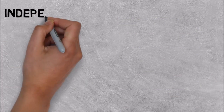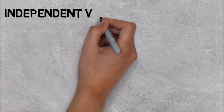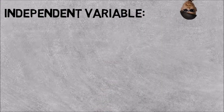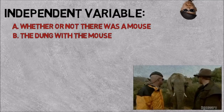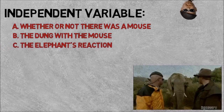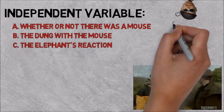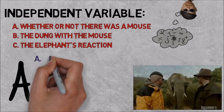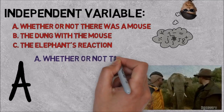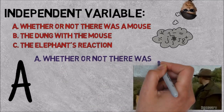Okay, can you identify the independent variable of their experiment? Was it whether or not there was a mouse under the dung, the dung that had the mouse hiding under it, or the elephant's reaction during the experiment? The correct answer is A because whether or not the mouse was present under the dung was the difference between the experimental groups.